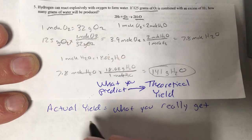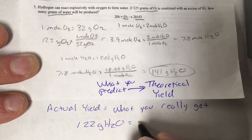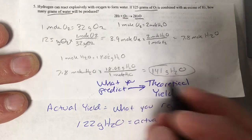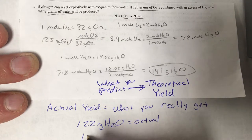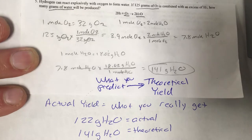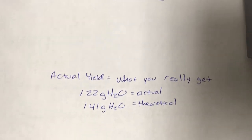Again, according to our math our theoretical should be 141. We need a way of indicating how good our reaction was or how good we were at running the reaction.